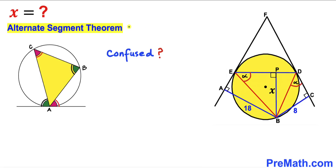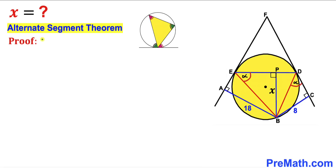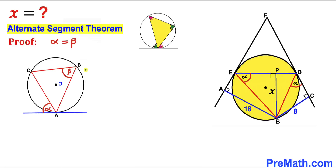This theorem is a little bit confusing, so let me give you a quick proof. Let's focus on triangle ABC inscribed in a circle with this tangent, and we are going to prove that angle alpha must be equal to angle beta inside this triangle.